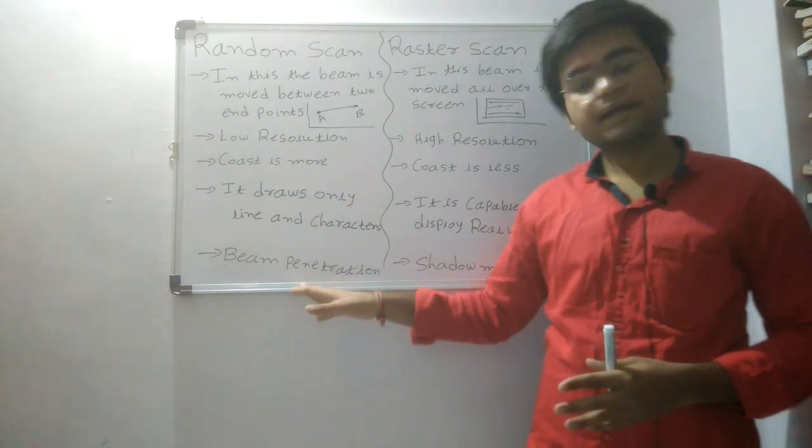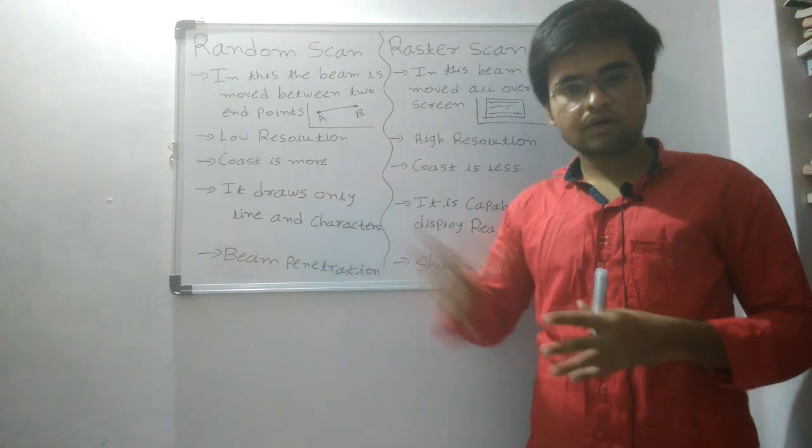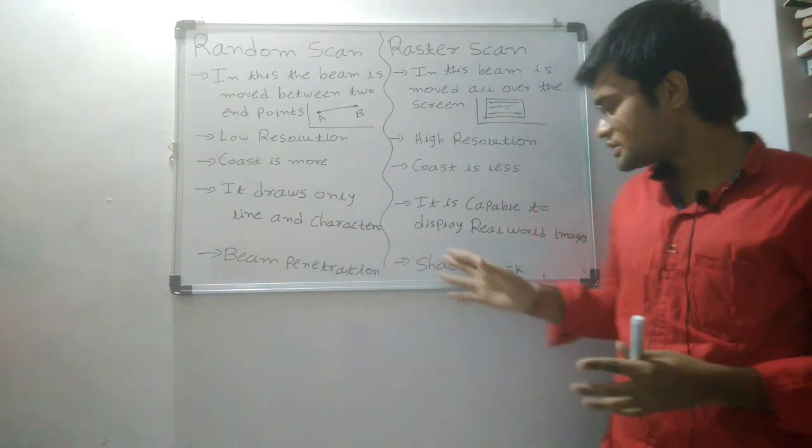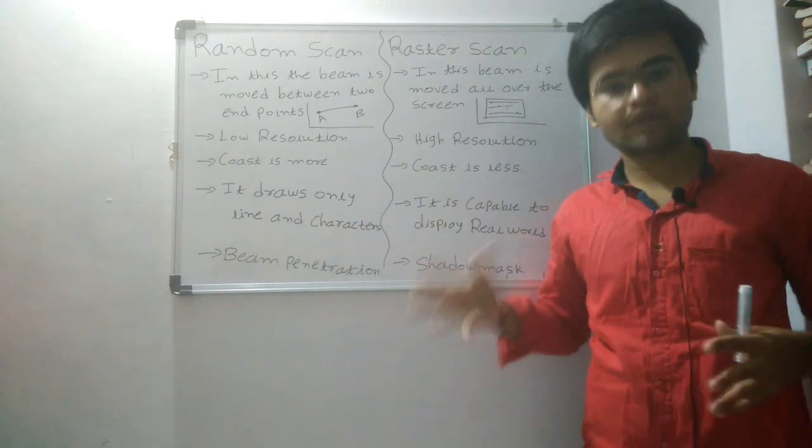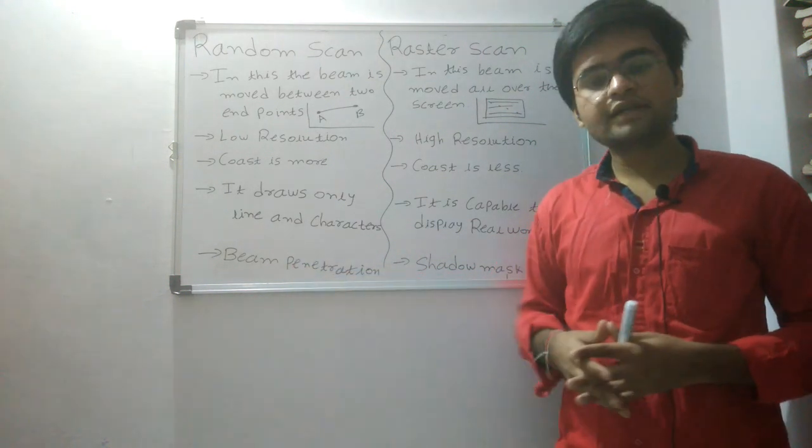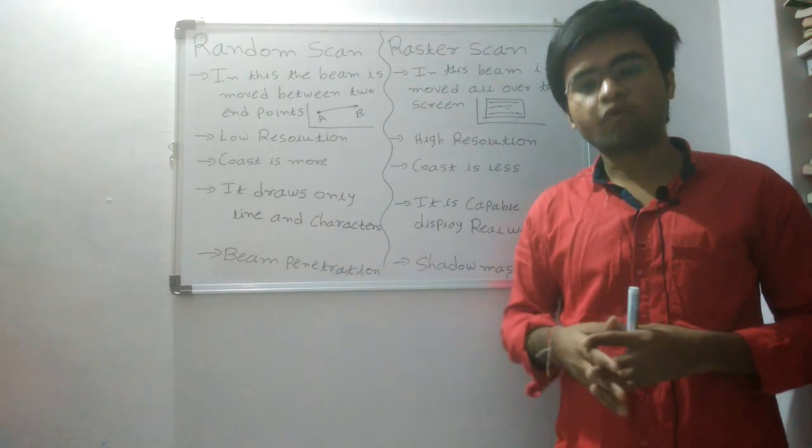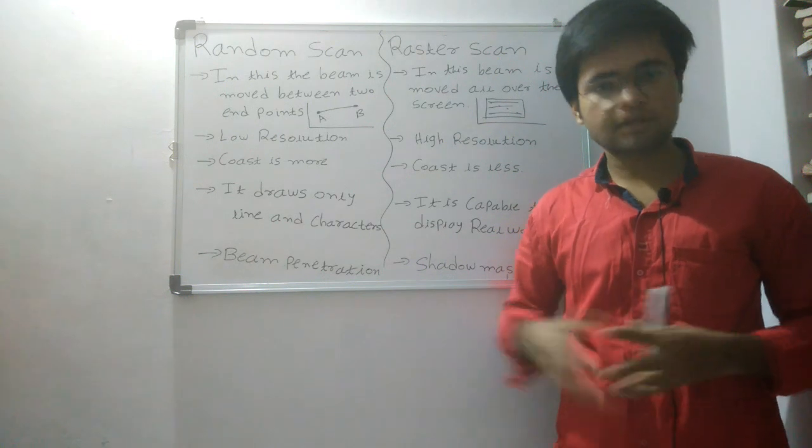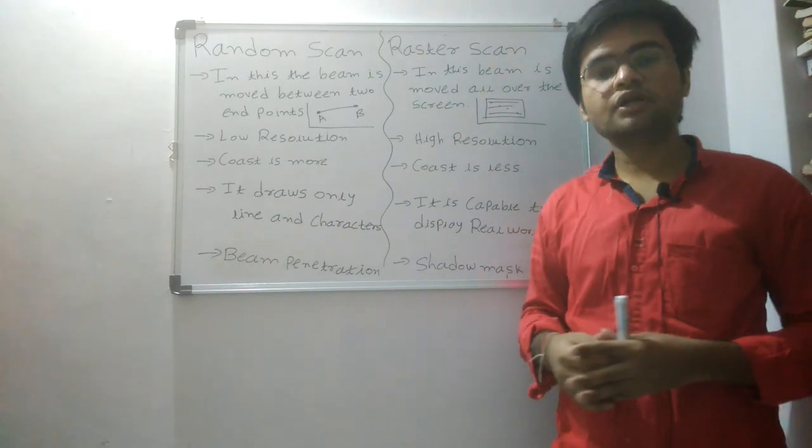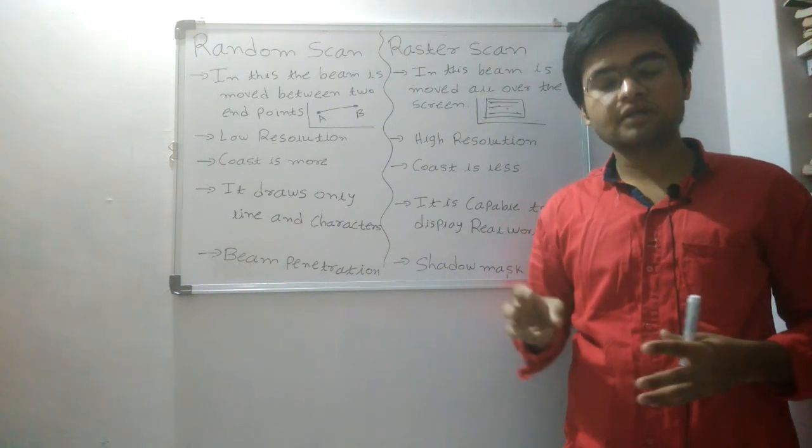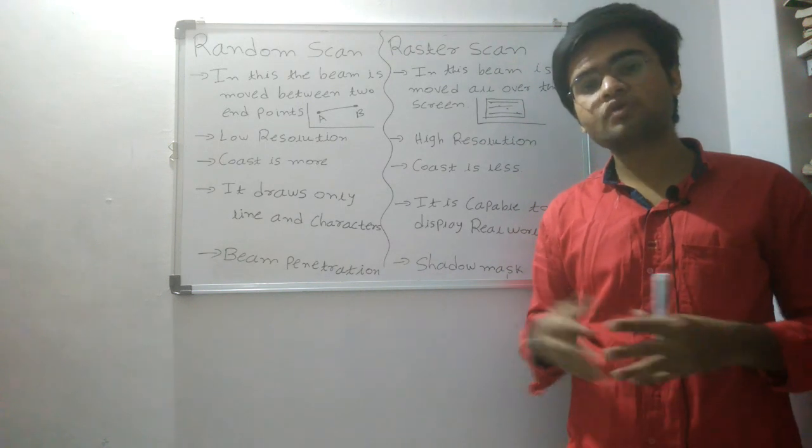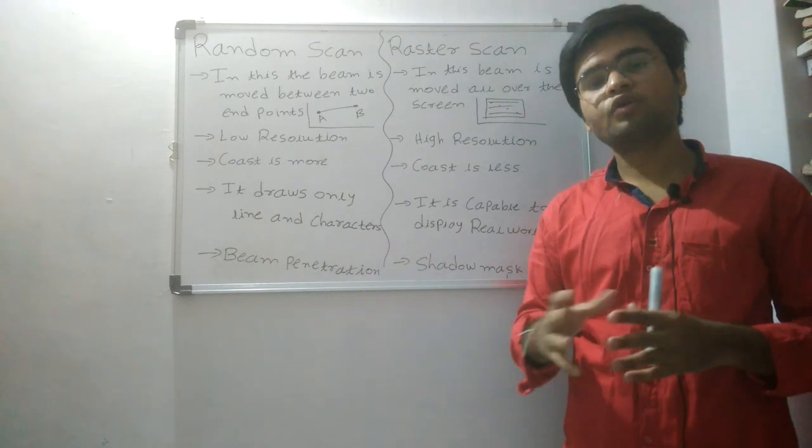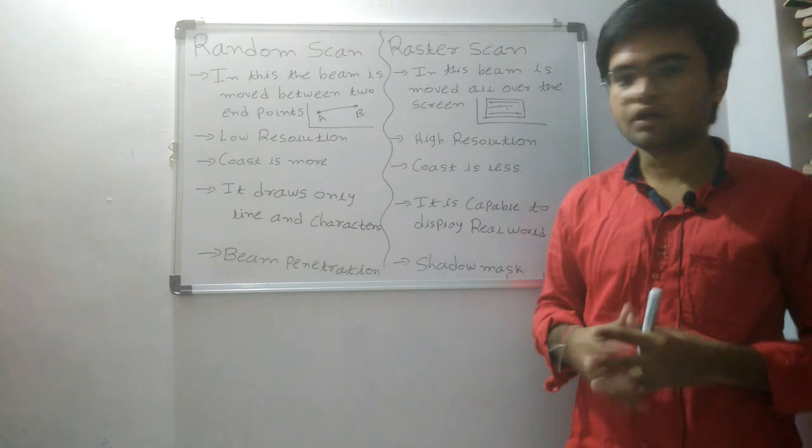Beam parent design method is the example of raster scan display, and shadow mask method is the example of raster scan display. Generally, beam parent design method only produces four colors with the use of phosphor screen. Shadow mask method uses the RGB three basic colors, and with these three basic colors, it produces thousands and millions of colors.